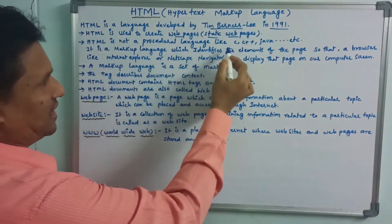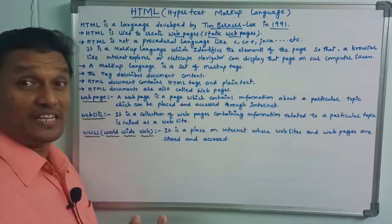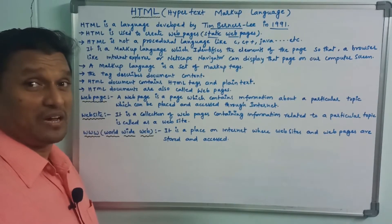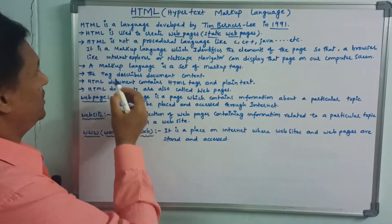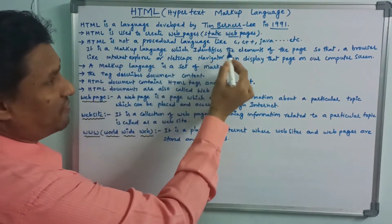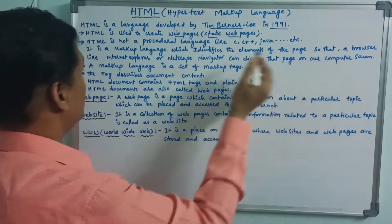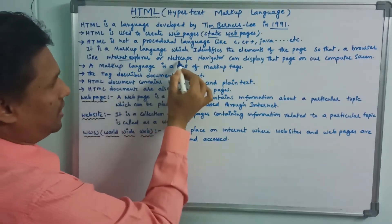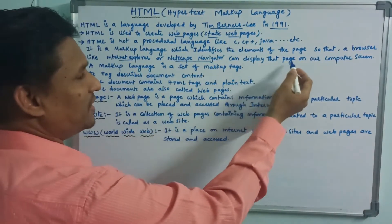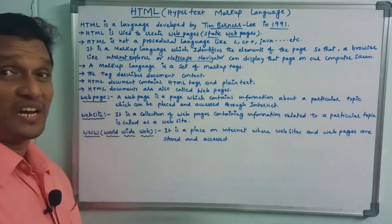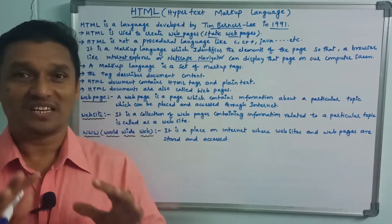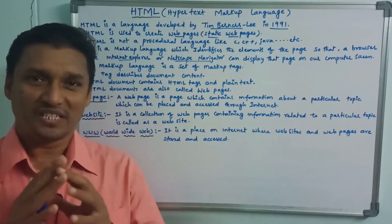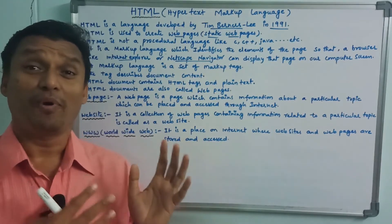It is not a processor language like C, C++, or Java. HTML is a markup language, not a processor language. It identifies the elements of the page so that a browser like Internet Explorer or Netscape Navigator can display that page on our computer screen.